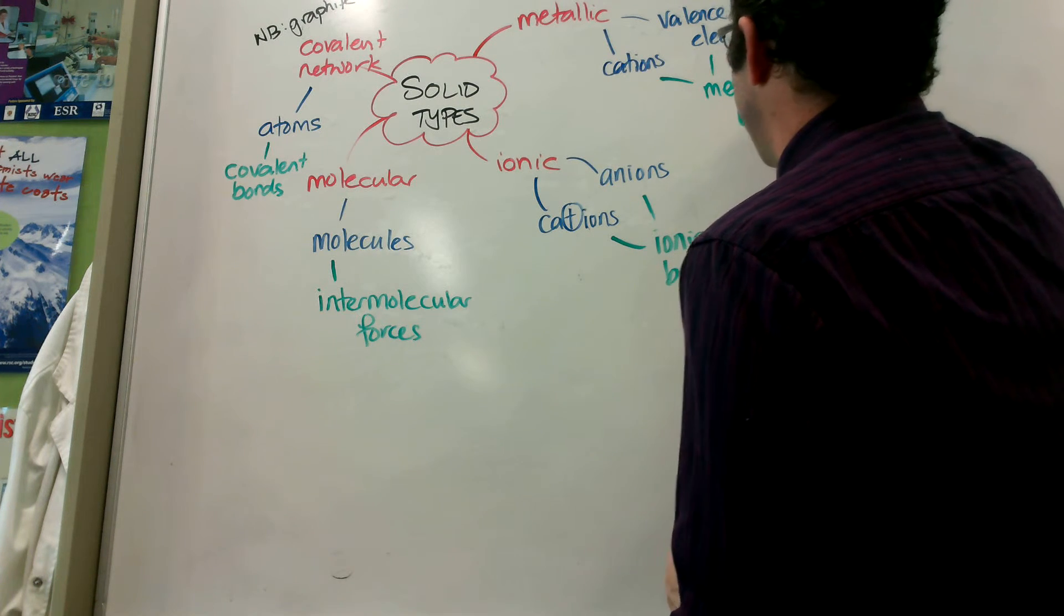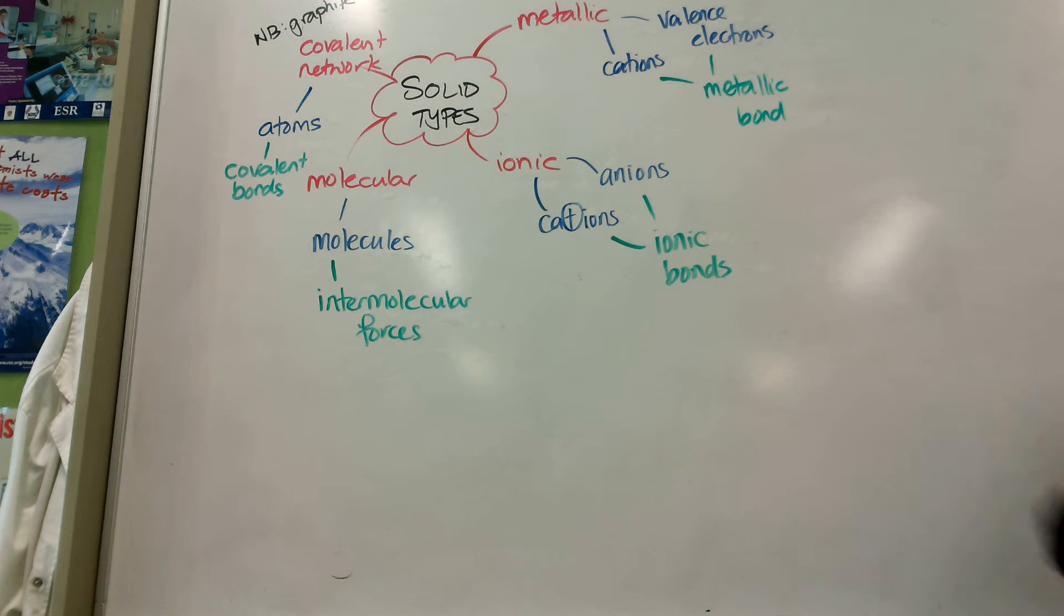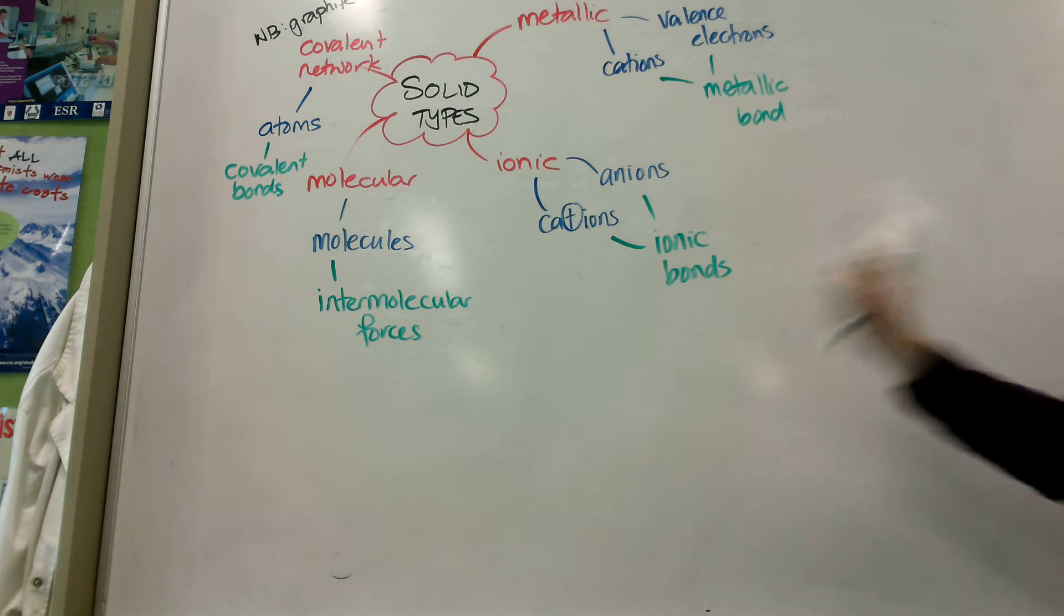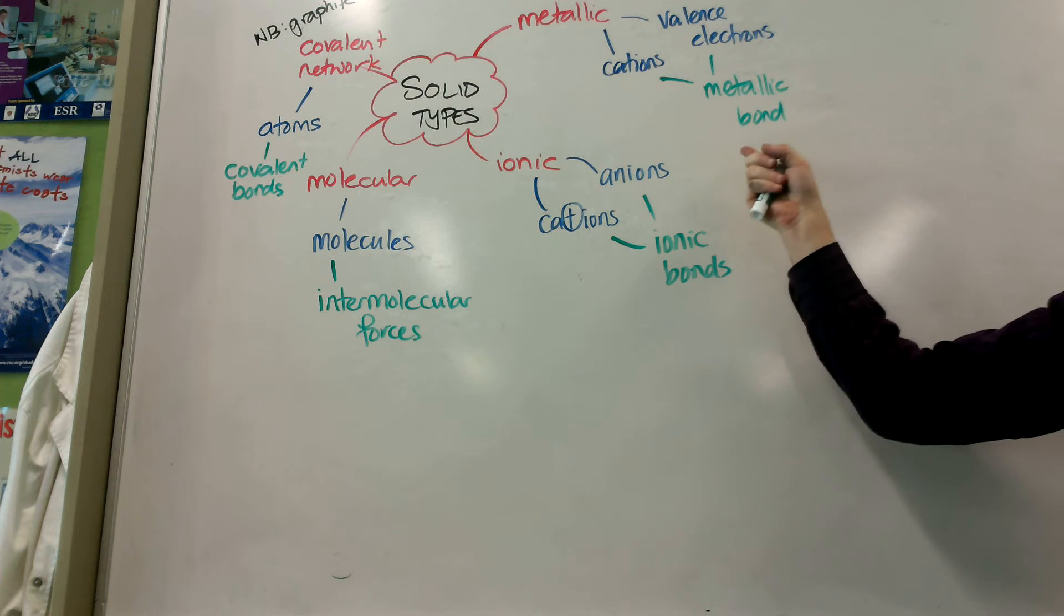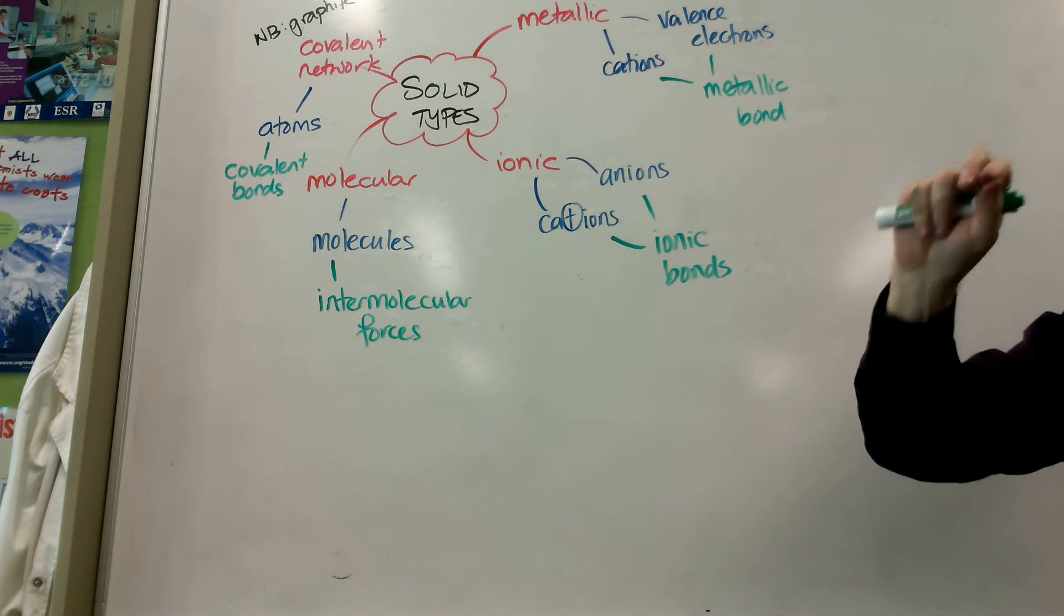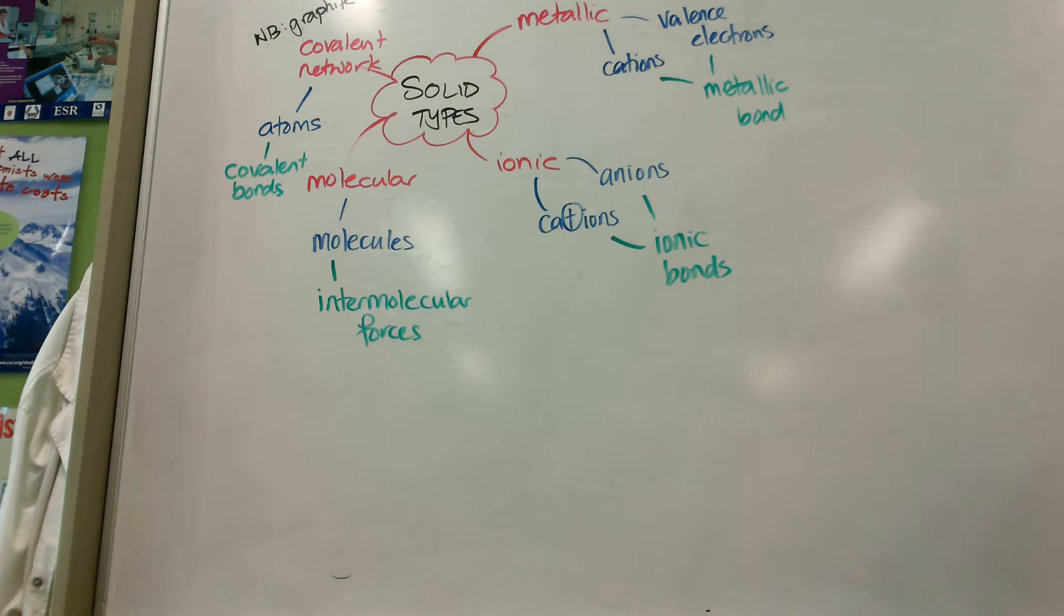So, that would lead me to another question. Ionic bonds, metallic bonds, are both electrostatic or electric attractions, positives and negatives. How come I can't bend and shape an ionic solid, but I can bend and shape with malleability and ductility, pull into a wire? How come I can bend and shape a metallic solid?